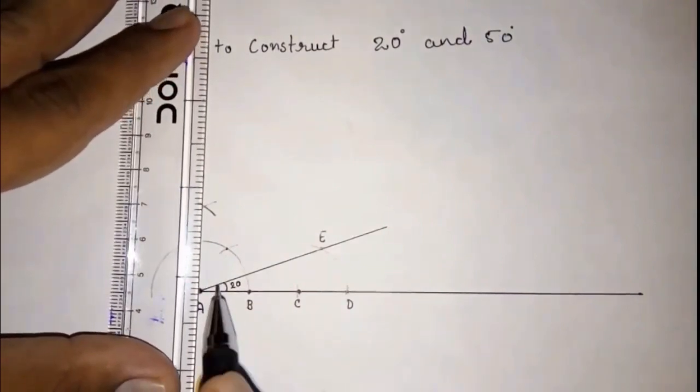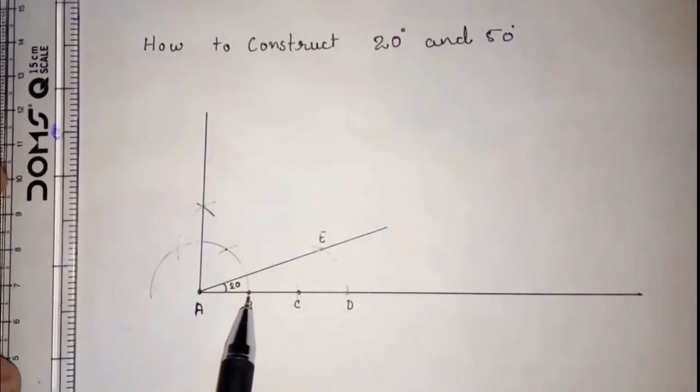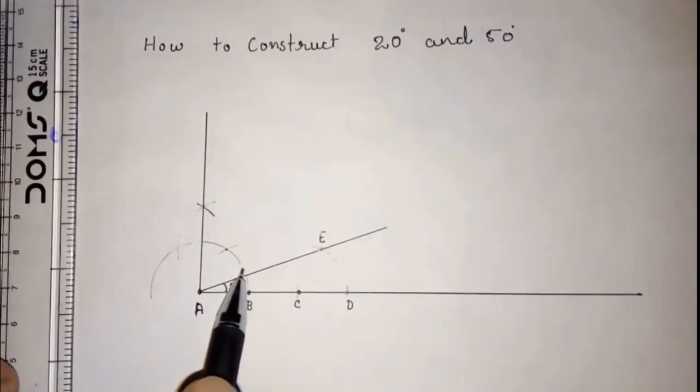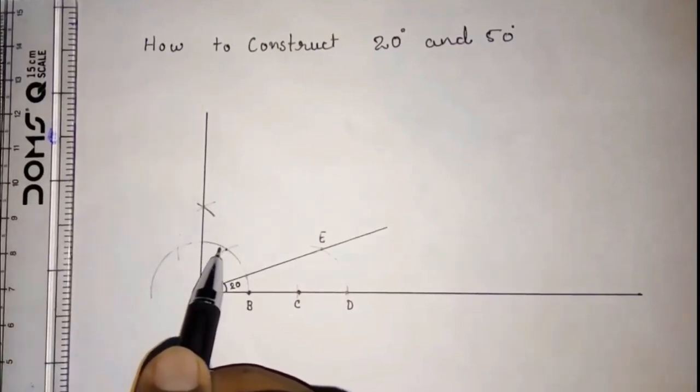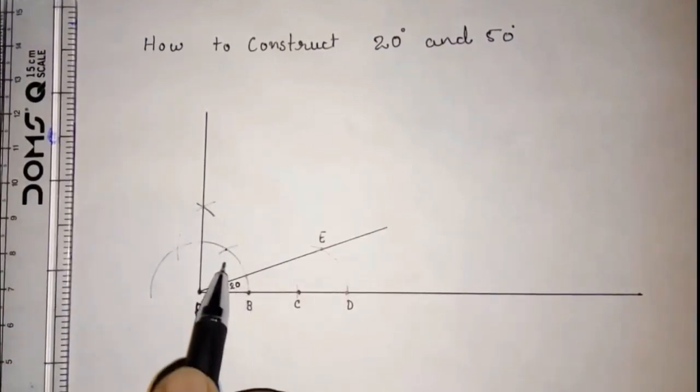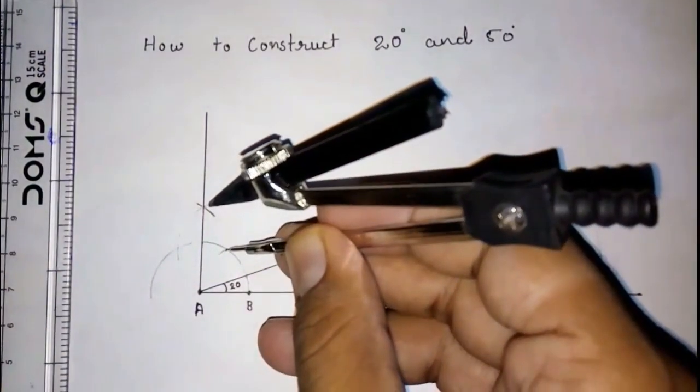Now we have to join this line. Now this arc of 20, this arc up to 60, and this whole 90. So the distance: 0 to 20 is 20, 20 to 60 means 40. And 60 to 90, so this gap is 30. This is 30, so I will take that gap, that arc gap.